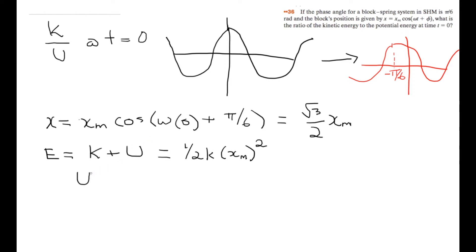Energy at t=0 is equal to ½k times (√3/2 xm)². This gives us ¾ times ½k times xm², so this is equal to ¾E.